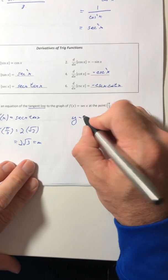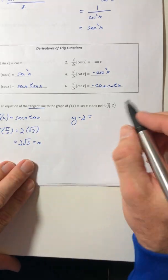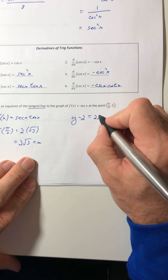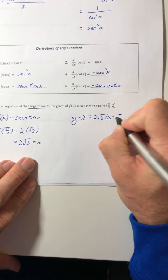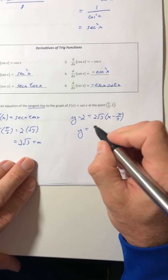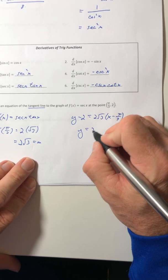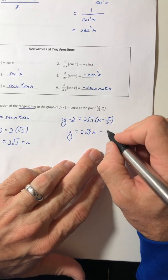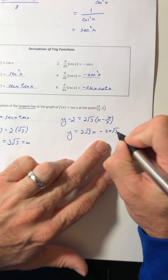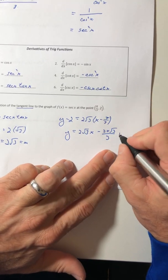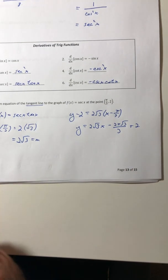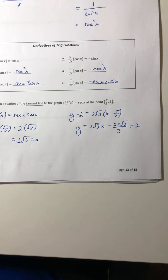Then use the point slope formula to give you the actual line. So y minus two equals two root three times x minus pi over three and then just solve for y. So y equals two root three times x minus two pi root three over three plus two. And it looks weird, but there's the equation of your line. Okay, so let's stop the video here and then we'll look at higher order derivatives in the next video.